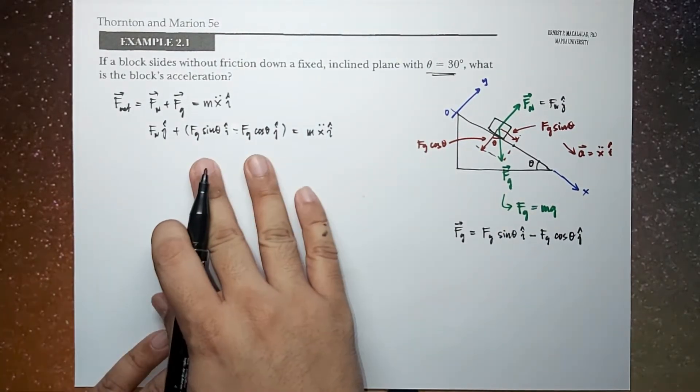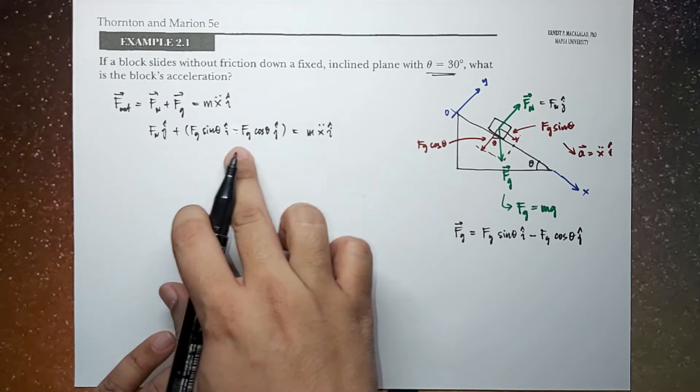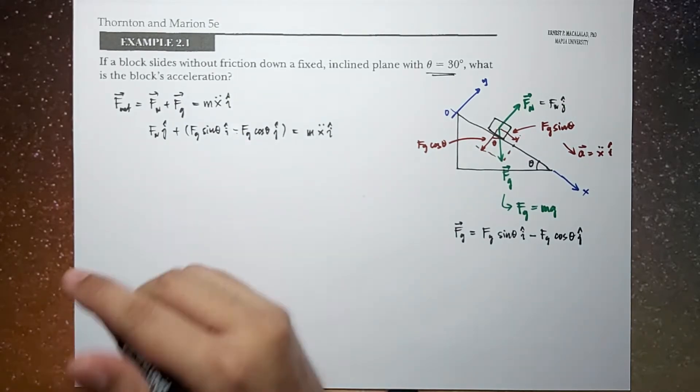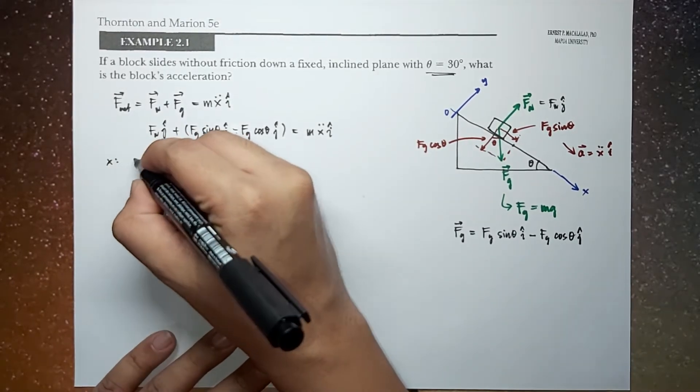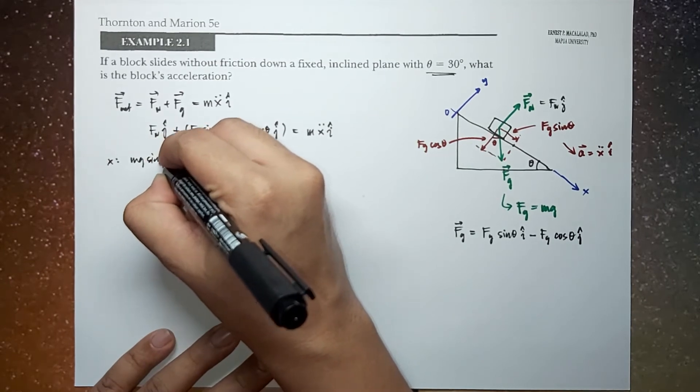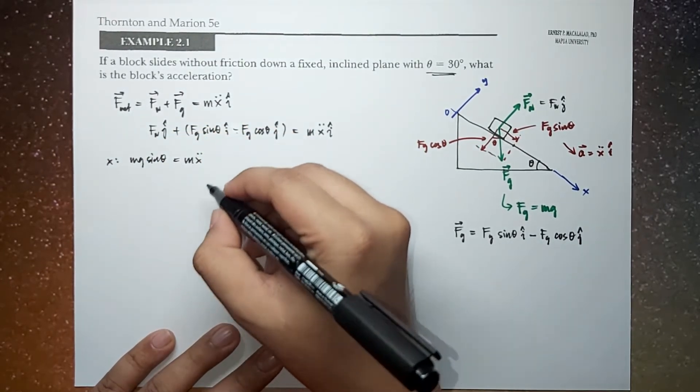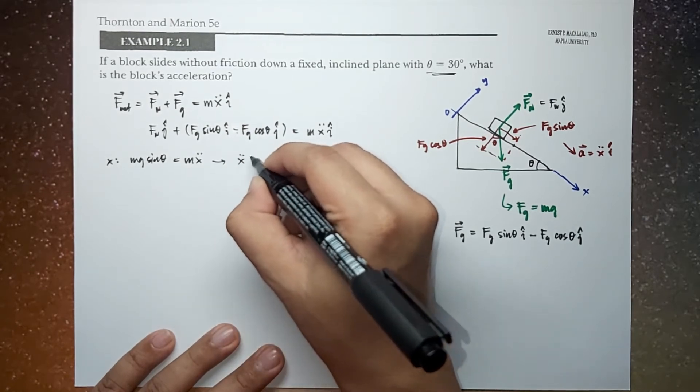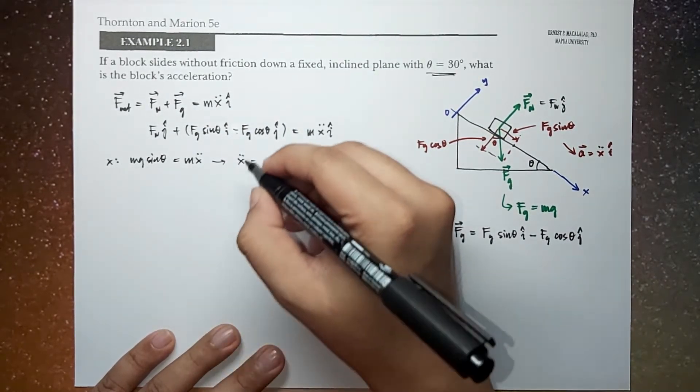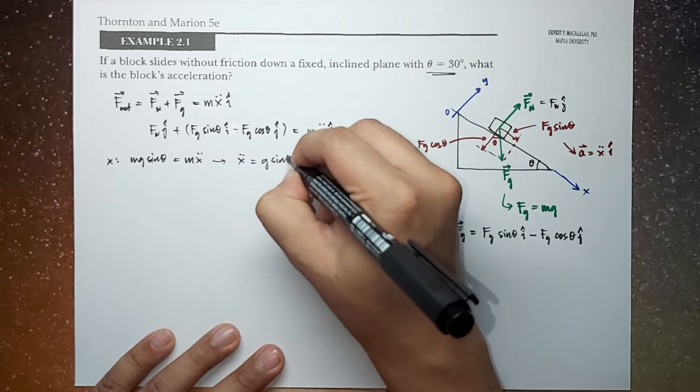We can therefore separate the equation into its x and y components. So for the x component, we have Mg sin theta equals Mx double dot, which gives us the acceleration of the block along the x component to be g sin theta.